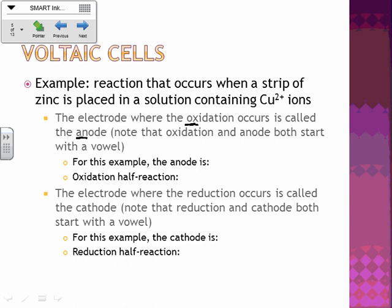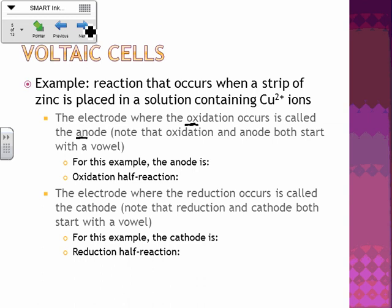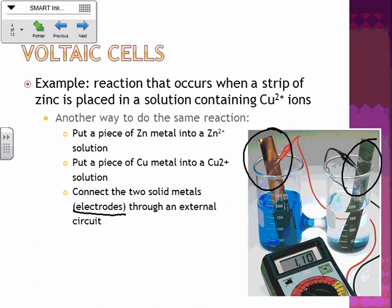For this example, let's write the oxidation half reaction first. Which thing is being oxidized? The zinc. So our oxidation half reaction is: Zn(s) → Zn²⁺ + 2e⁻. Don't forget to write the electrons in on the half reactions. So the anode — the place where oxidation is happening — would be on the zinc strip.